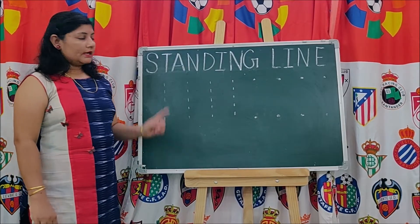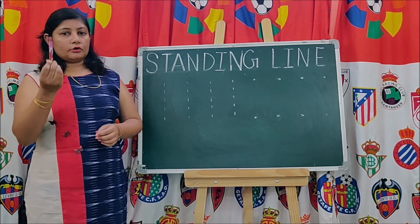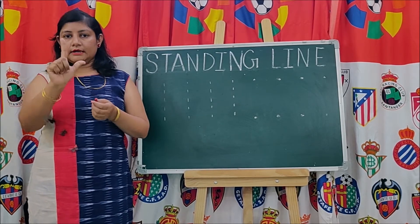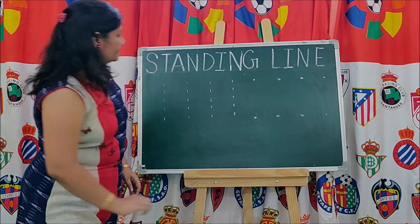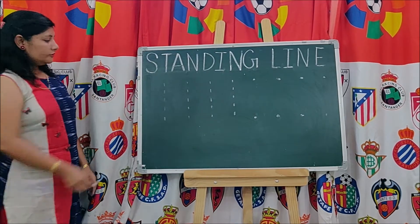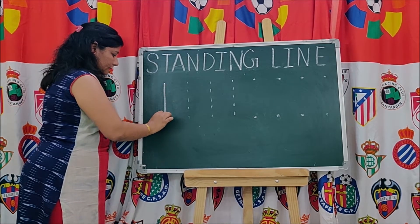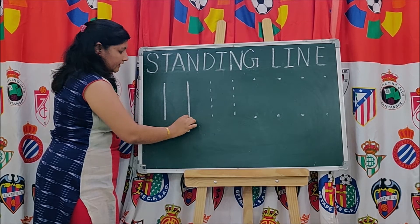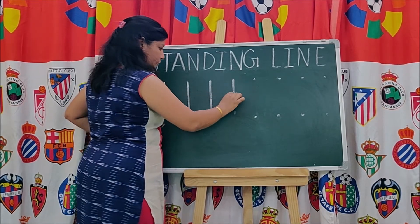Now we will learn how to make a standing line. For making a standing line or any pattern, you have to use only crayon pencils. Hold the crayon with your thumb, index finger and middle finger like this. Here we have some dotted lines on the board — trace over the dotted lines top to bottom, making a standing line.